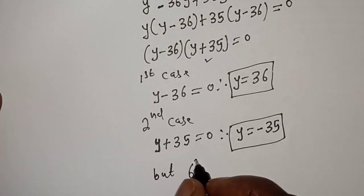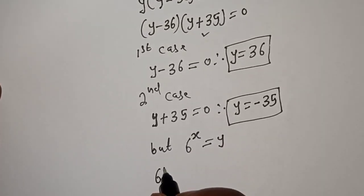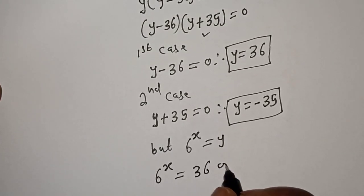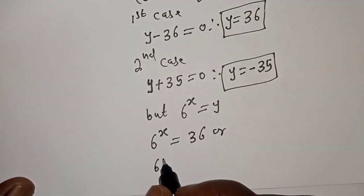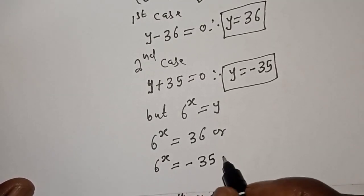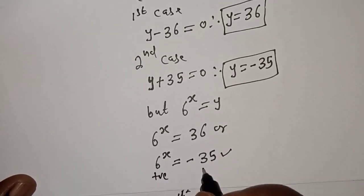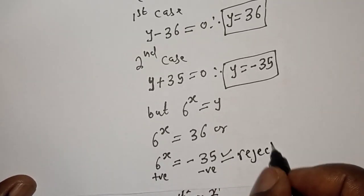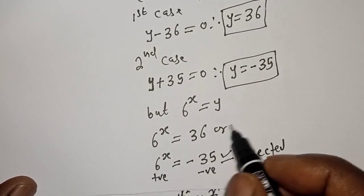Since 6 raised to power s is equal to y, we have 6 raised to power s equals 36, or 6 raised to power s equals minus 35. But 6 raised to power s is always positive, so the negative solution is rejected. The only solution we have is 6 raised to power s equals 36.